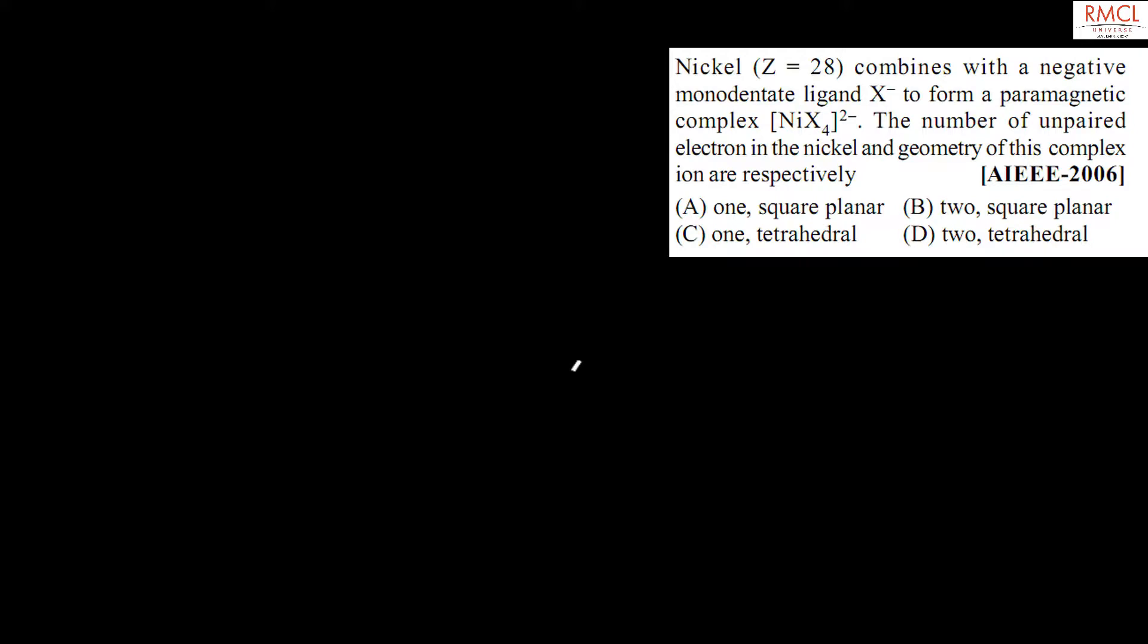The given question from IEEE 2006: Nickel (atomic number 28) combines with a negative monodentate ligand X⁻ to form a paramagnetic complex. The number of unpaired electrons in the nickel and geometry of this complex ion are respectively...